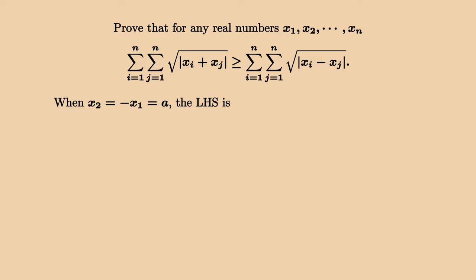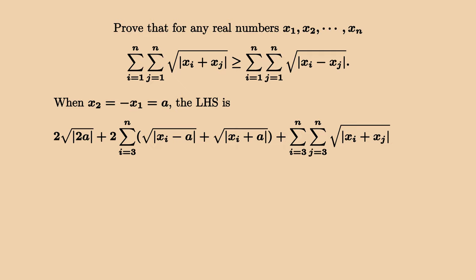Let's say x2 equals minus x1 equals a. Then we can expand the left-hand side as follows: we get 2 times square root of 2a plus square root of xi minus a and square root of xi plus a plus some other terms. These terms are symmetric in the sense that we get both minus a and plus a.